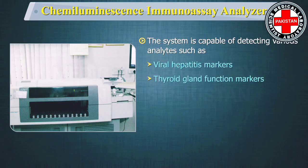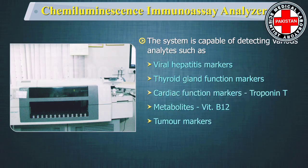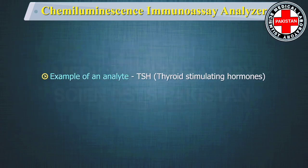The system is capable of detecting various analytes such as viral hepatitis markers, thyroid gland function markers, cardiac function markers such as troponin T, and metabolites such as vitamin B12. We will illustrate thyroid stimulating hormone as an example of an analyte.